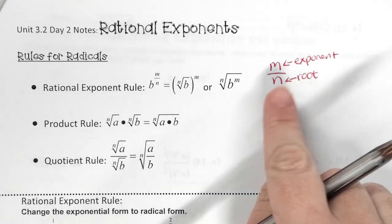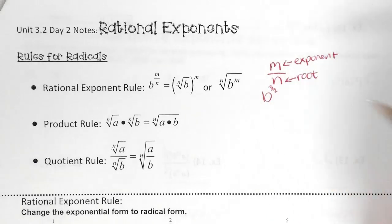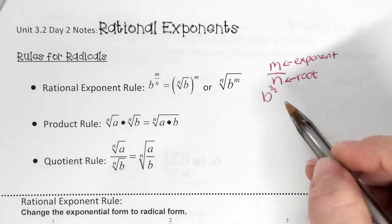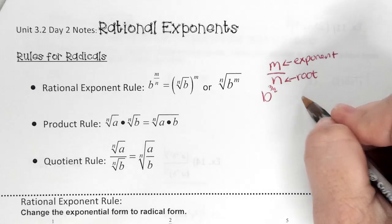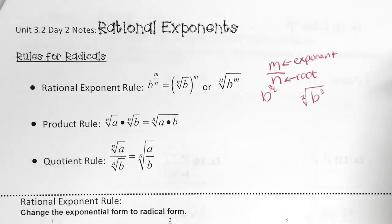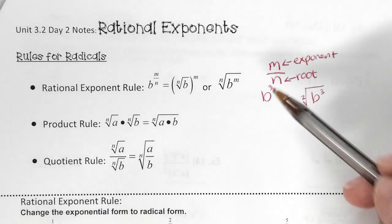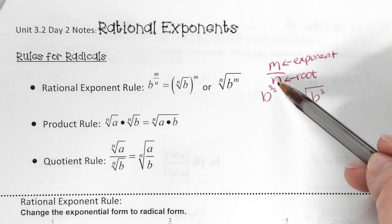So if I have b to the 3 over 2, what's my root? 2. So it's a square root of b to the 3rd power, which can be simplified, but we're not going to worry about all that right now. Right now we're just worried about setting it up. Roots are on the bottom.